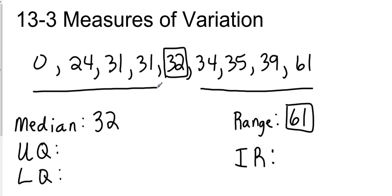And to find the upper quartile, all we do is take the numbers that are to the right of the median, which is those four right there, and we find their median. So we find the median of those four numbers.